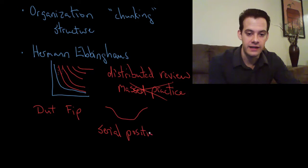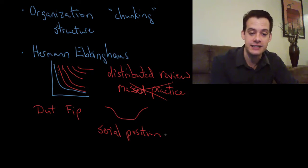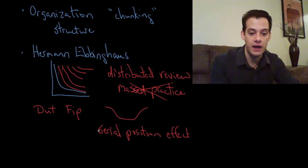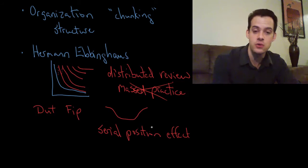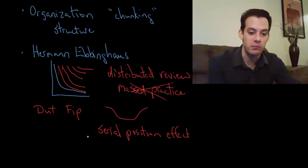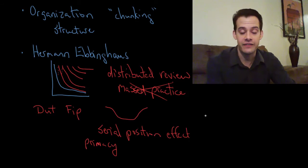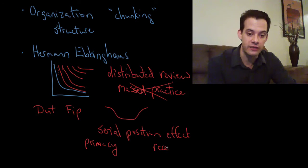This is known as the serial position effect. The idea that the position of the information on the list actually influences recall and it's easier to remember things at the beginning of the list and at the end of the list. There's really two effects here. The first one is called primacy, referring to the idea that we remember things at the beginning of the list better. And then the things at the end of the list, this effect is referred to as recency.